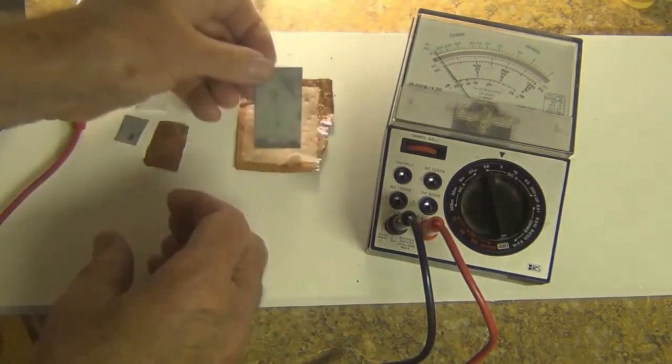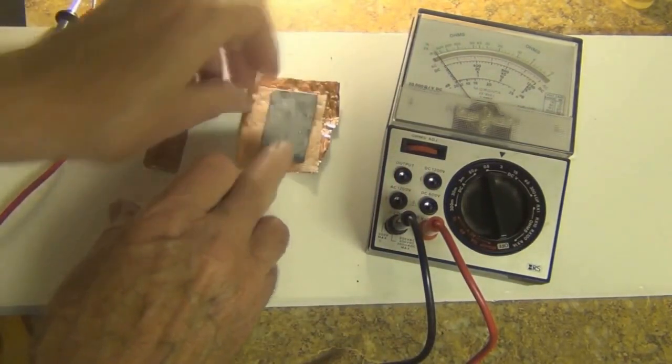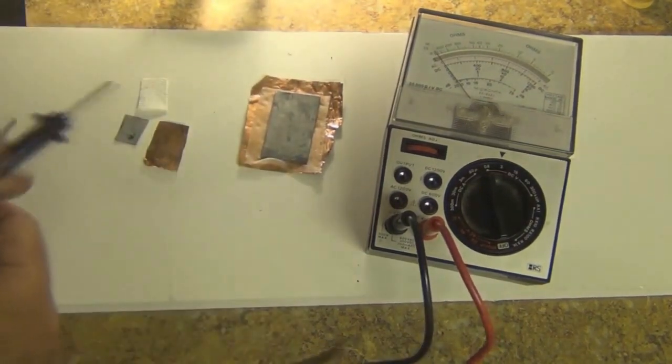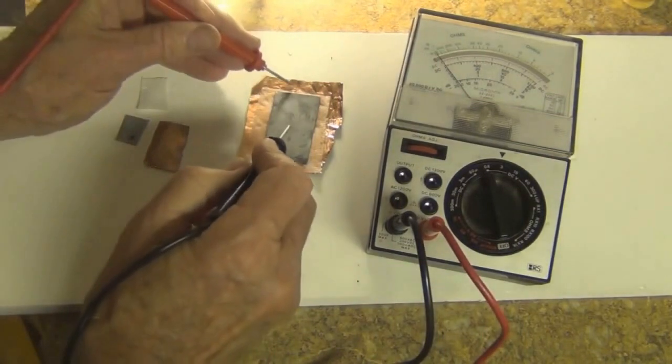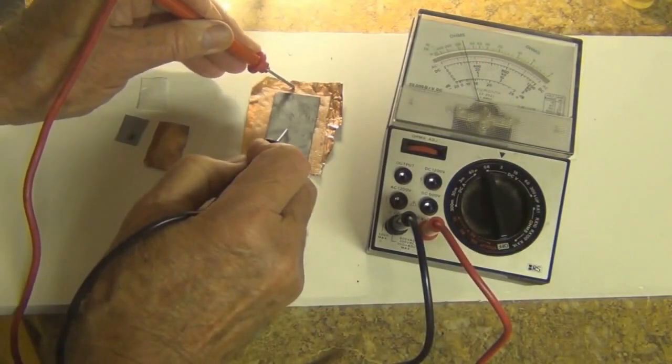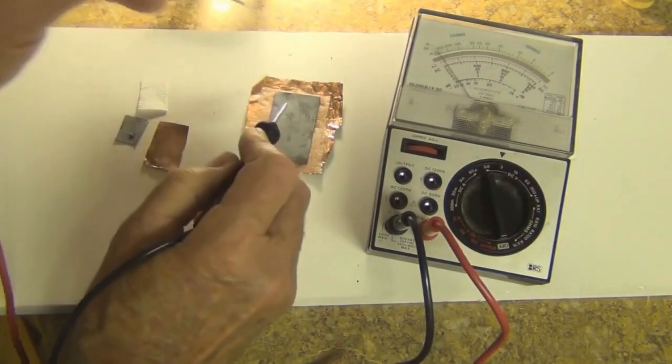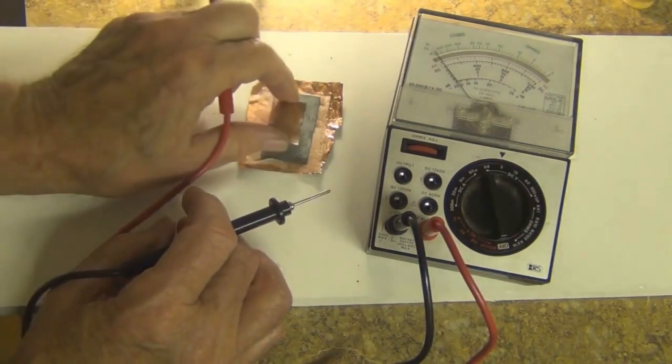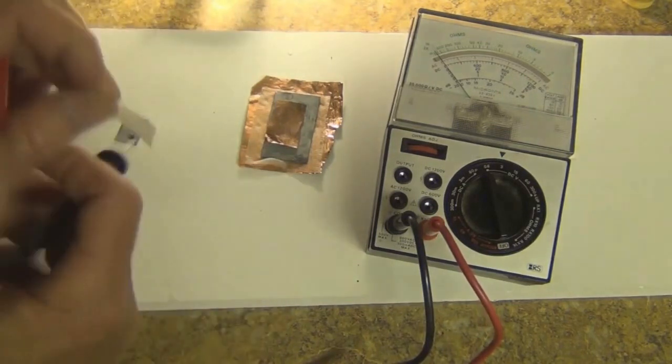And when we take the tissue paper and dip it in salt water, and sandwich it between the two dissimilar metals, we find that it produced electricity. Watch this. Placing the zinc on top of the tissue paper, which is on top of the copper, and taking the electrodes from the meter, we discover that almost three-quarters of a volt is produced. This combination of copper, salt, tissue paper, and zinc was called an electrochemical cell by Volta.